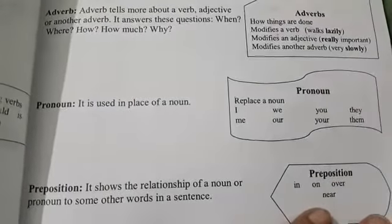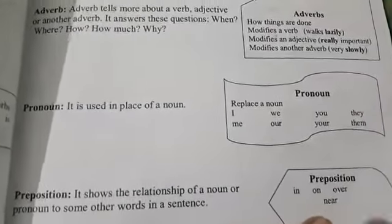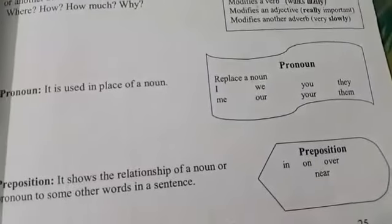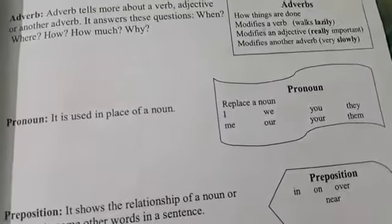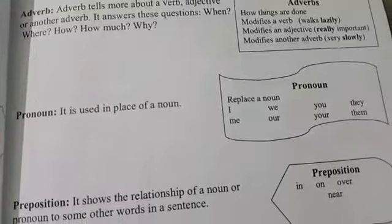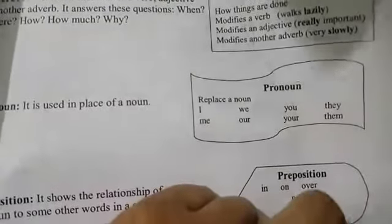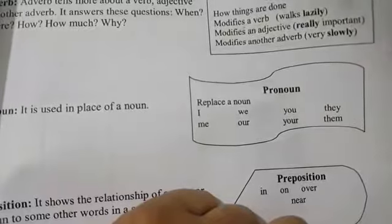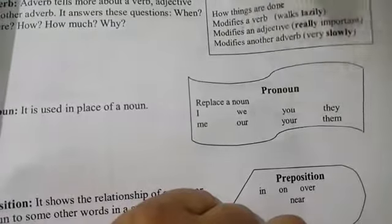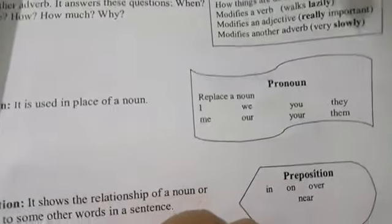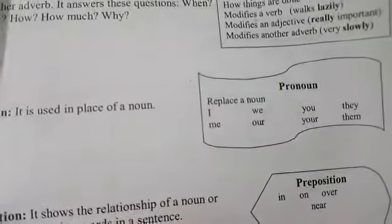Pronoun is used in place of a noun. As you all know, it is used in place of a noun, and it shortens the repetition of the same noun or word. Replace a noun — just say: I, we, you, they, me, our, your, them, he, she, it.